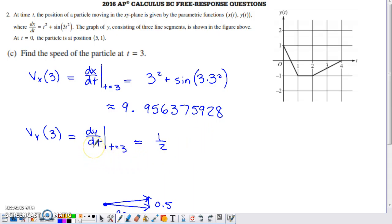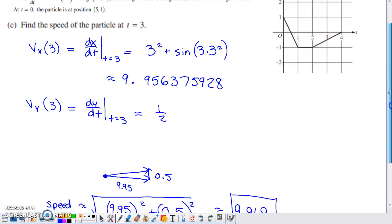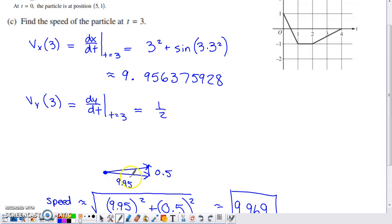Evaluate for the y component of velocity at 3, and that's just going to be the slope of this line segment again. That ended up being 1/2. So if you have a vector where the x component is 9.95 and the y component is positive 1/2, you need to know the magnitude of this resultant vector.